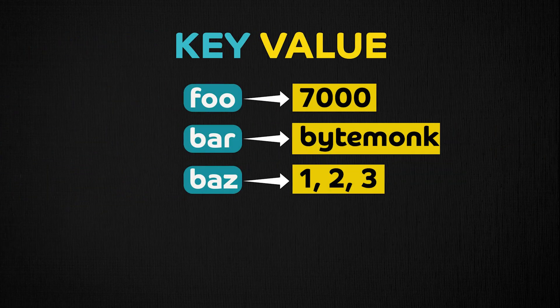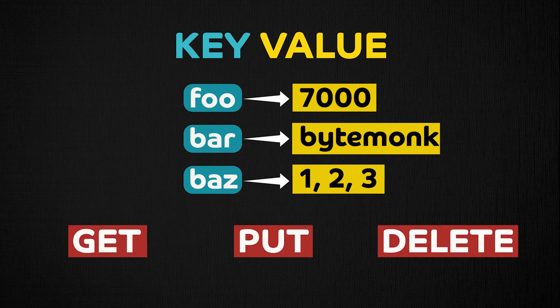At the same time, key value stores usually do not have a querying language as in RDBMS to retrieve data. They only provide some simple operations such as get, put, and delete. Hence, data querying or retrieving should be handled manually at the application level.